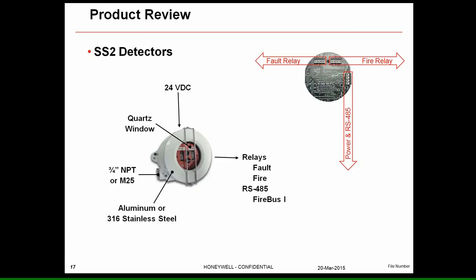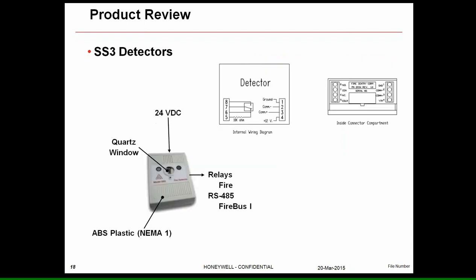The SS2 is the older generation — our first explosion-proof offering for the oil and gas industry. It uses a quartz window for UV, operates on 24V DC, and is available in aluminum or stainless with 3/4 NPT or M25 conduit entries. It has one SPDT fault relay and one SPDT fire relay, and uses the Firebus 1 protocol. There are only 12 connection points on this device, and there is no through-the-window optical self-test or switch-selectable options as found on the FSX series.